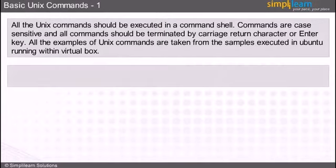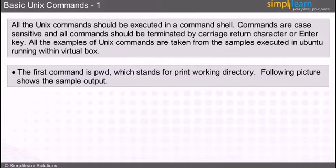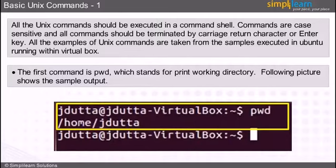The first command we should try is PWD, which stands for Print Working Directory. The PWD command outputs the name of the directory which we are currently located in. For example, typing PWD in the desktop directory will show forward slash home forward slash username forward slash desktop. In the highlighted section, we can see that forward slash home forward slash jdutter is the current directory generated by PWD command's execution.